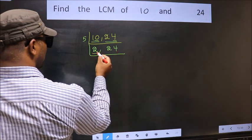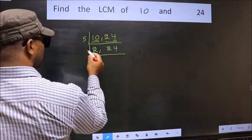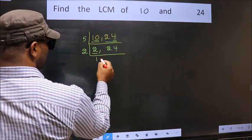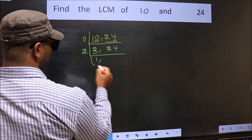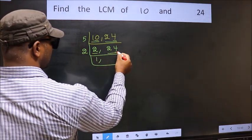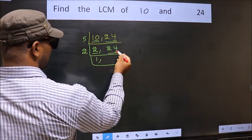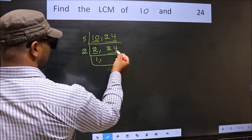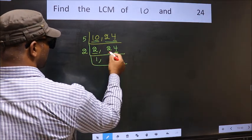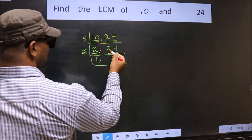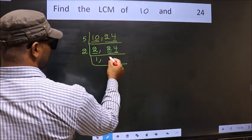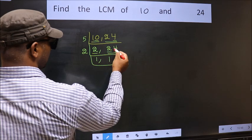Now here we have 2. 2 is a prime number, so 2 times 1 is 2. Now the other number 24 — last digit 4, so this number is divisible by 2. First number 2: when do we get 2 in the 2 table? 2 times 1 is 2.